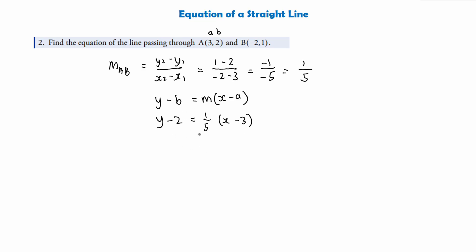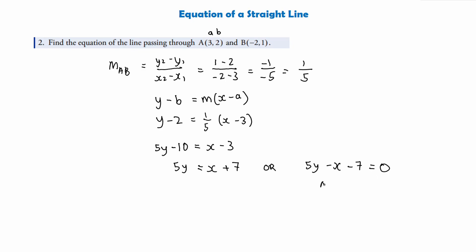We need to expand, so multiply everything through by 5 to get rid of the fraction. We get 5y minus 10 equals 5 times (1/5) which cancels to give x subtract 3. We can give this as 5y equals x plus 7, or rearranged to the general form: 5y subtract x subtract 7 equals 0. This is the general equation of the straight line.